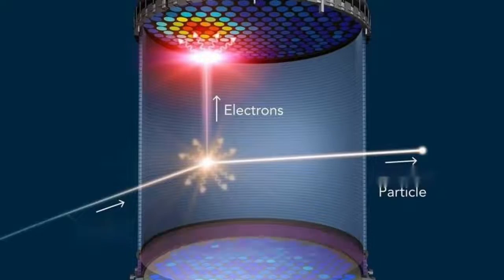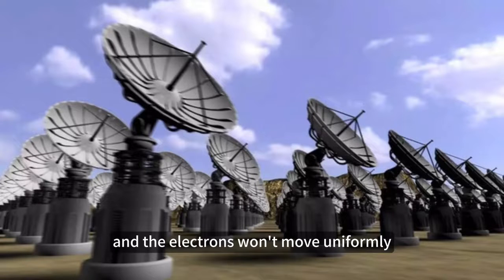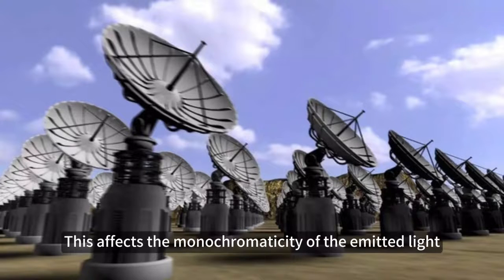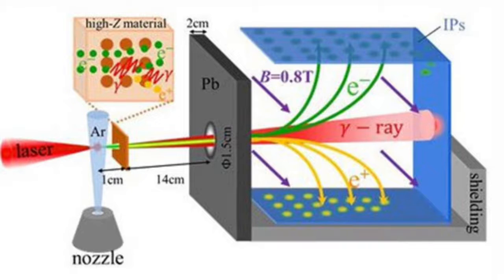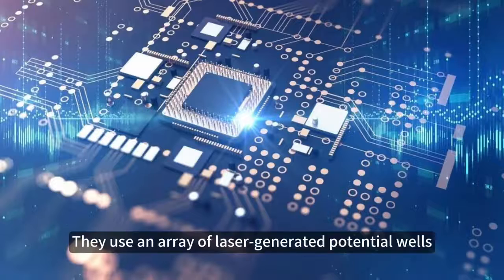If electrons are too spread out, the emitted light will also be dispersed and the electrons won't move uniformly. This affects the monochromaticity of the emitted light. So how do you control the spread of electrons? They use an array of laser generated potential wells.